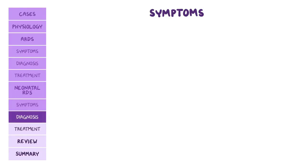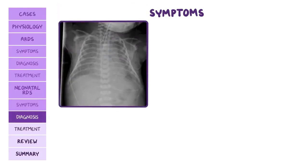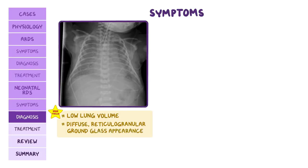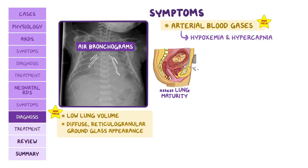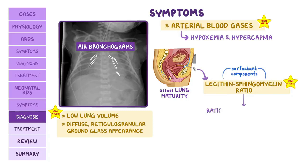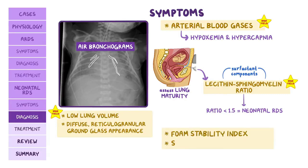Neonatal RDS is diagnosed by chest radiography or CT, where typical findings include low lung volume and the classic diffuse reticulogranular ground glass appearance — a contrast between black aerated alveoli and white or gray areas of atelectasis — along with air bronchograms, where air-filled bronchi appear dark against the surrounding atelectatic tissue. Arterial blood gases usually show hypoxemia and hypercapnia. Lung maturity can also be assessed prenatally via amniocentesis measuring the lecithin-to-sphingomyelin ratio; a ratio under 1.5 is predictive of neonatal RDS.